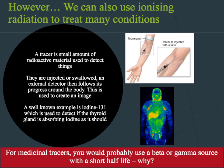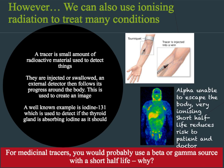We can then see how long the radioactive isotope remains in the thyroid. For medicinal tracers you want to use a beta or gamma source with a short half-life — this is a popular examination question. The reason you wouldn't use an alpha source is that it would be unable to escape the body as it cannot penetrate the skin. You want a short half-life in order to reduce the dangers to both the patient and the doctor.